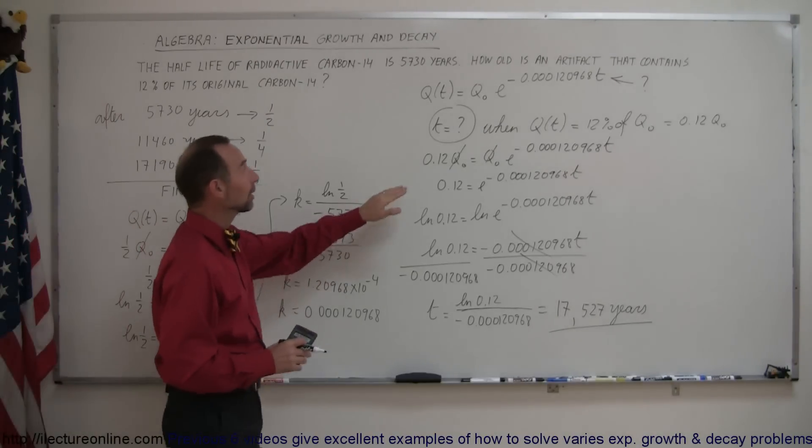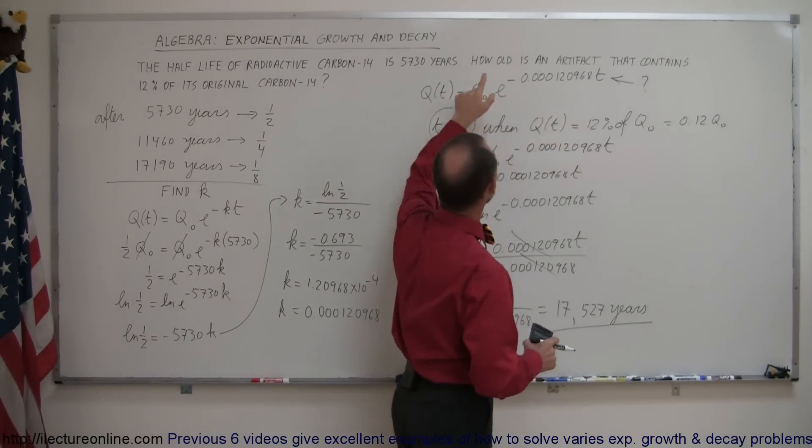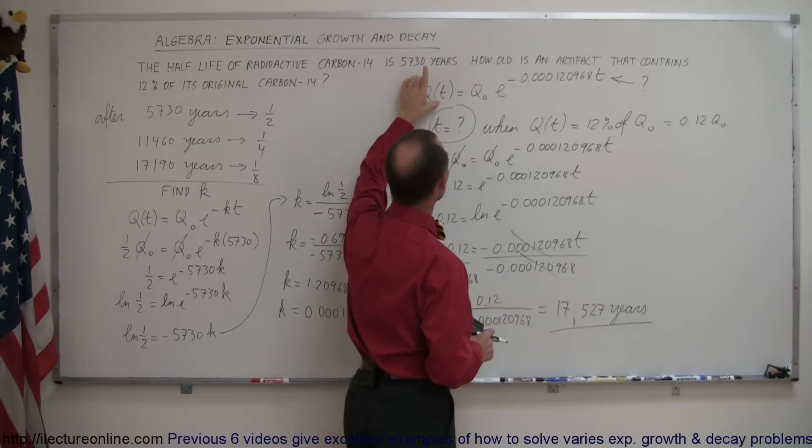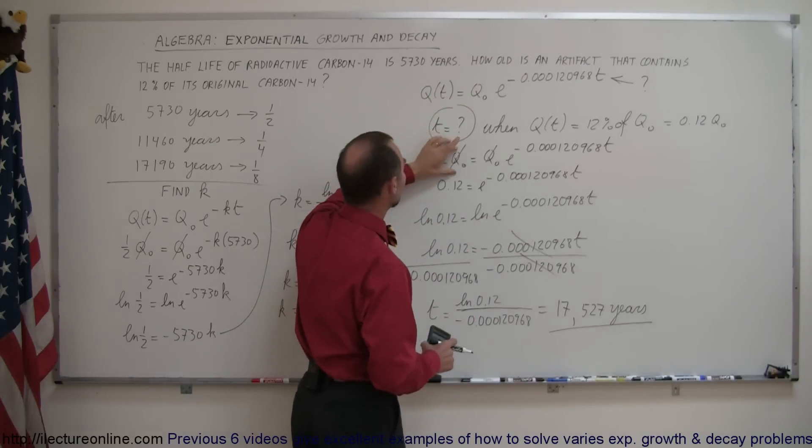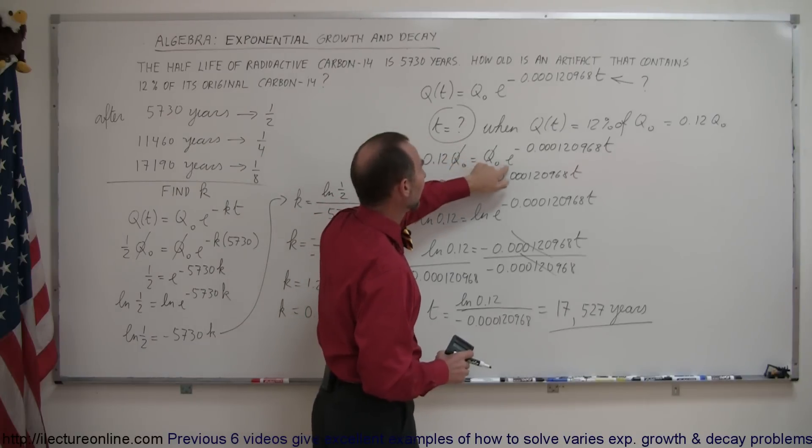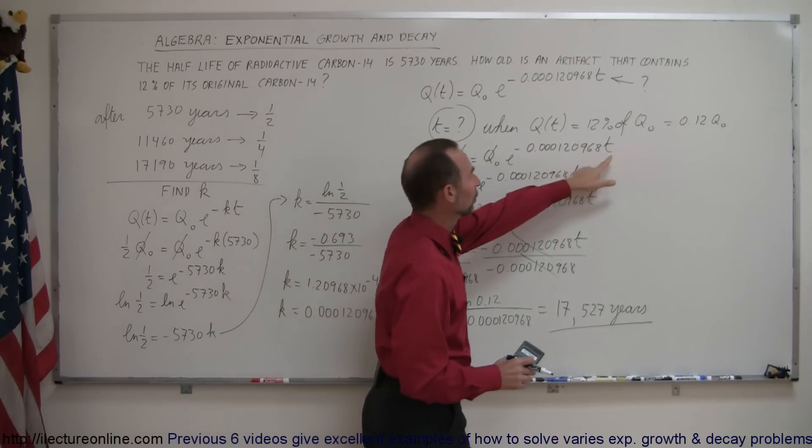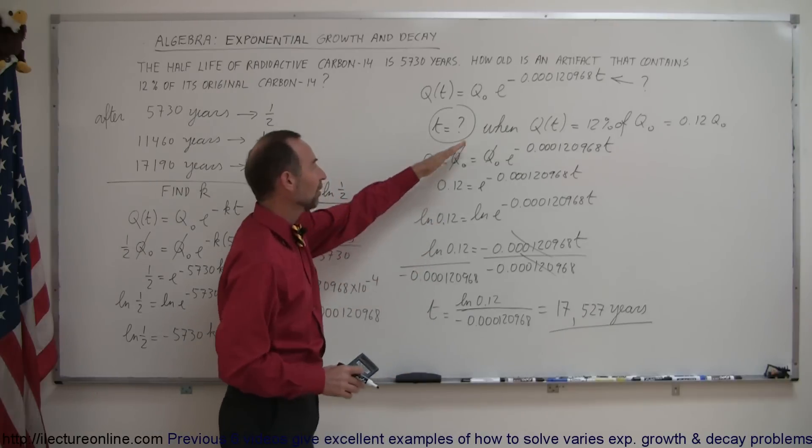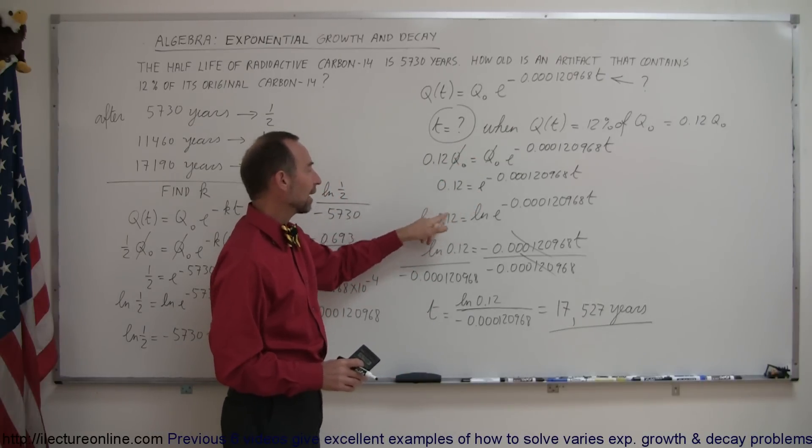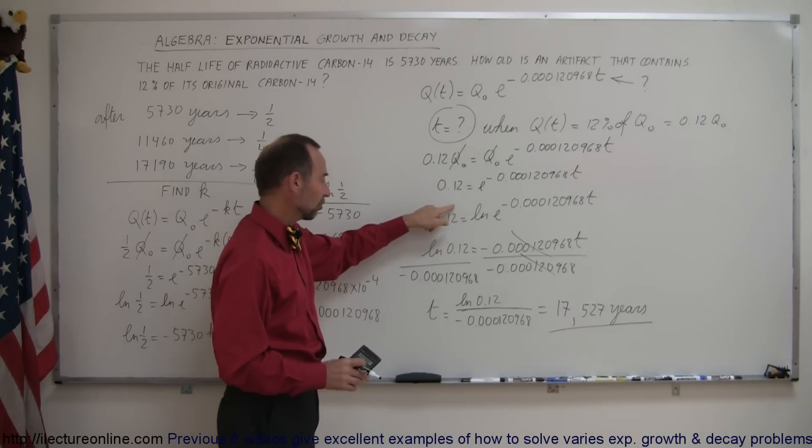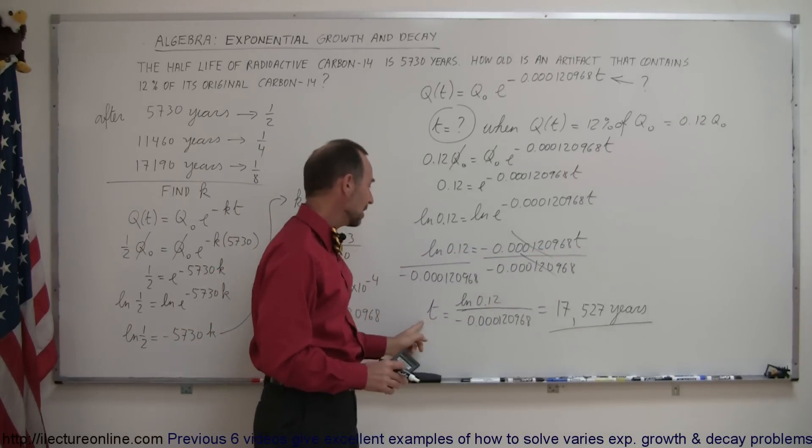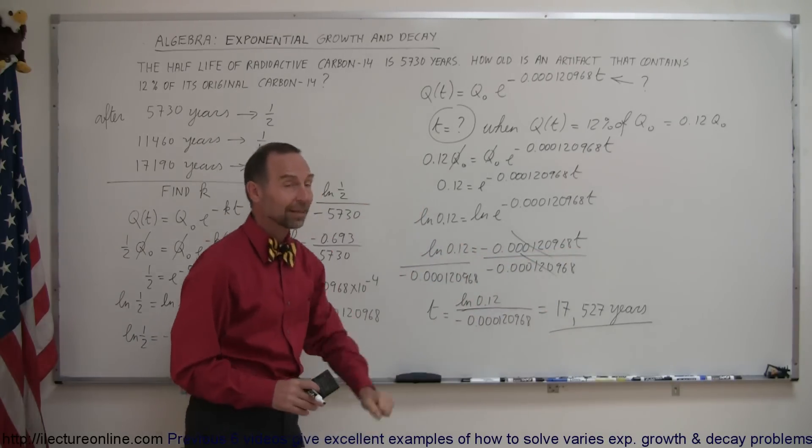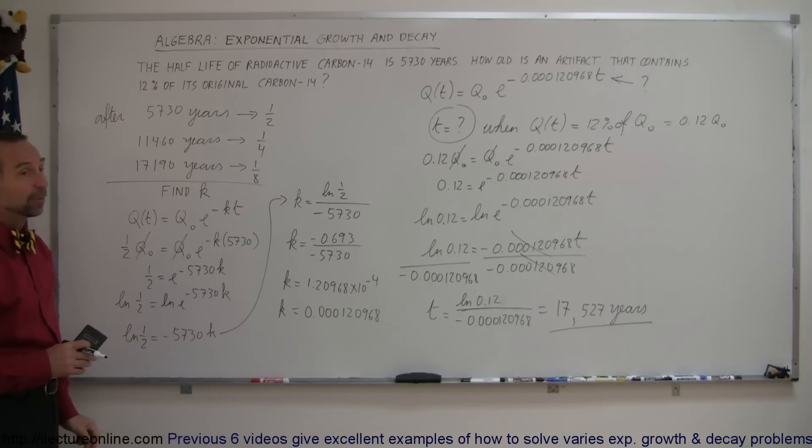We then plug that k back into our equation, now we want to find t, given that the final amount is 12% of the original amount, so we write 0.12 times the original amount equals the original amount times e to the minus k times t, and we're looking for t in this case. Of course, you can then see that the original amount cancels out. We then take the natural log of both sides to get rid of the exponential, then we algebraically solve for t, and then when we work that out, we get the answer. And so, in this way, it's not that hard of a problem if you follow this exact technique. So, give that a try, and see if that now makes sense to you. Hopefully it does. Good luck.